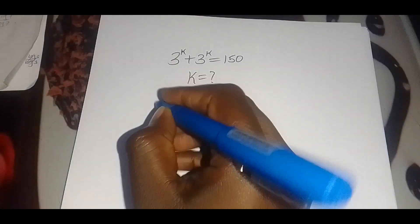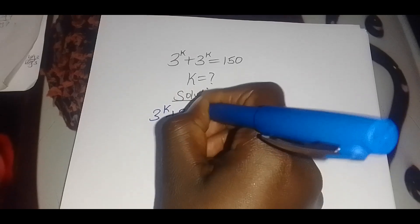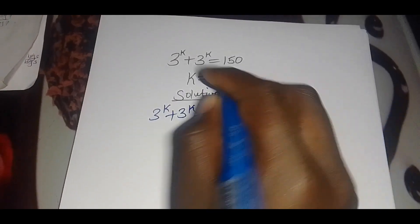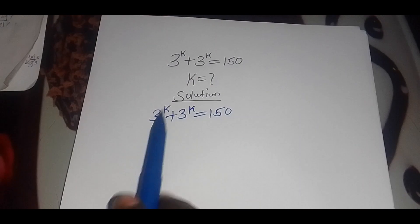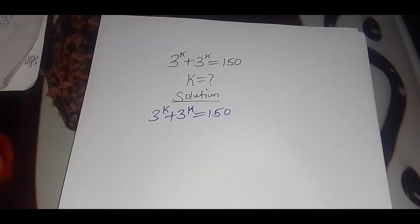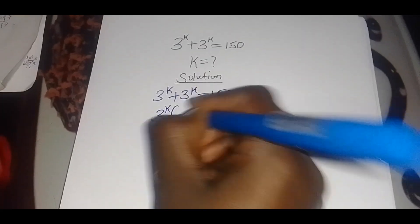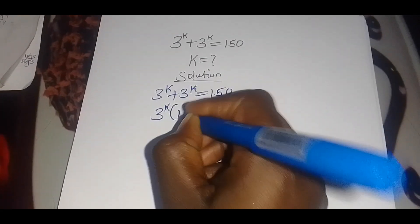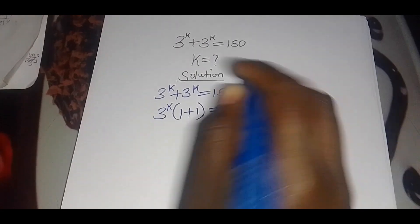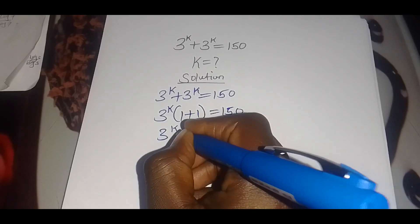We have 3 raised to power k plus 3 raised to power k, which equals 150. Since 3 raised to power k is common, we factor it out, so that we have 3 raised to power k multiplied by (1 plus 1) equals 150.